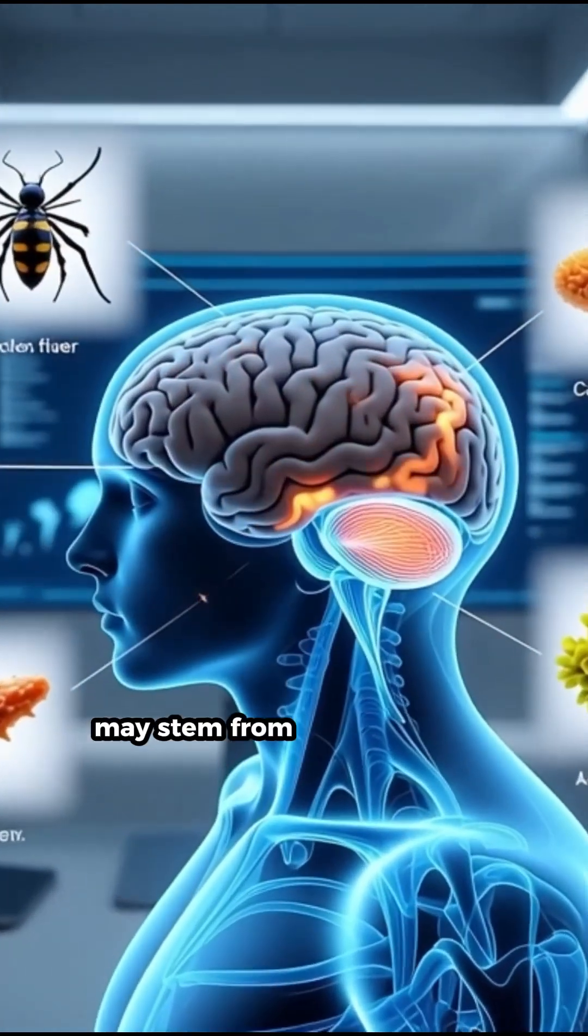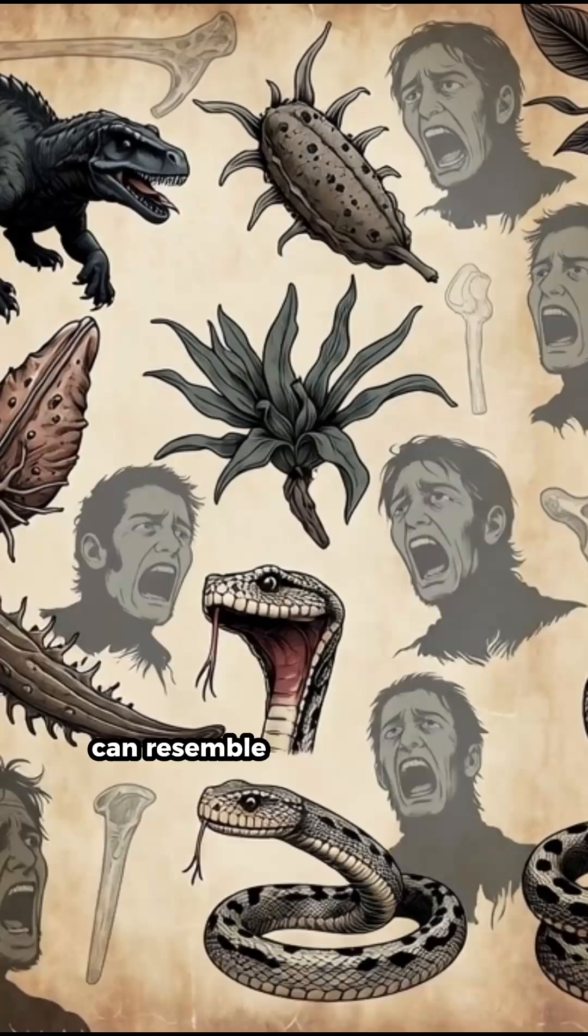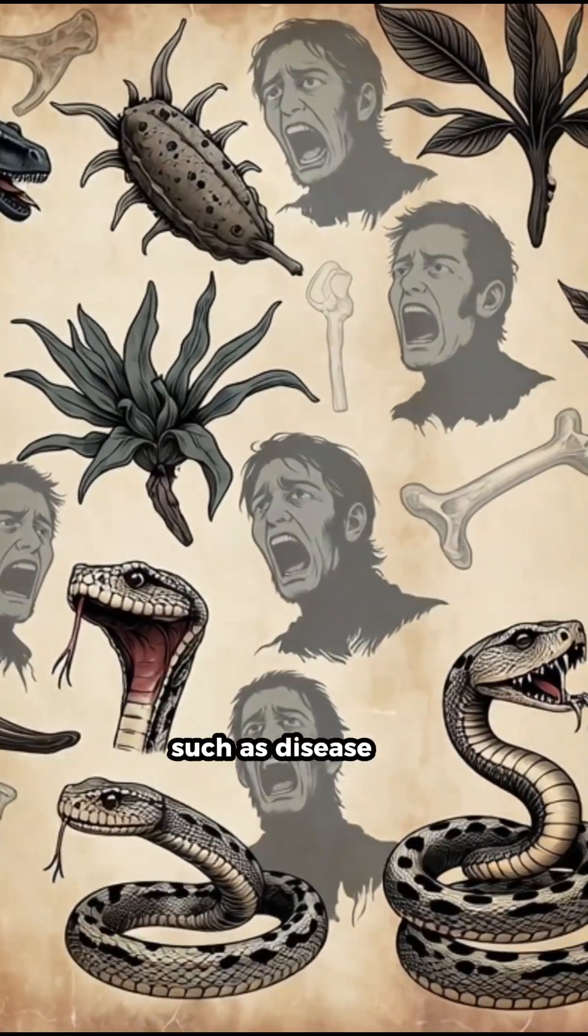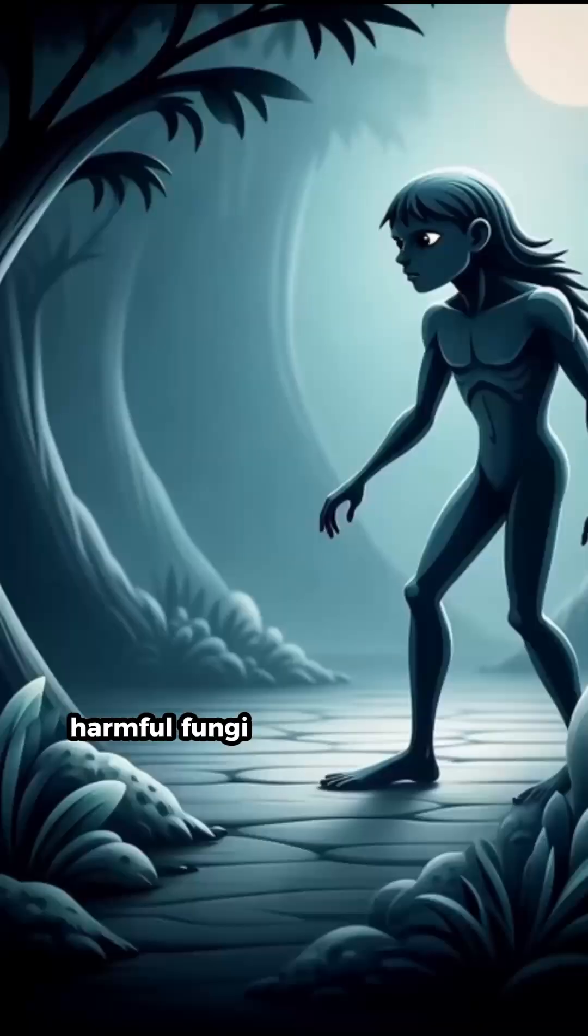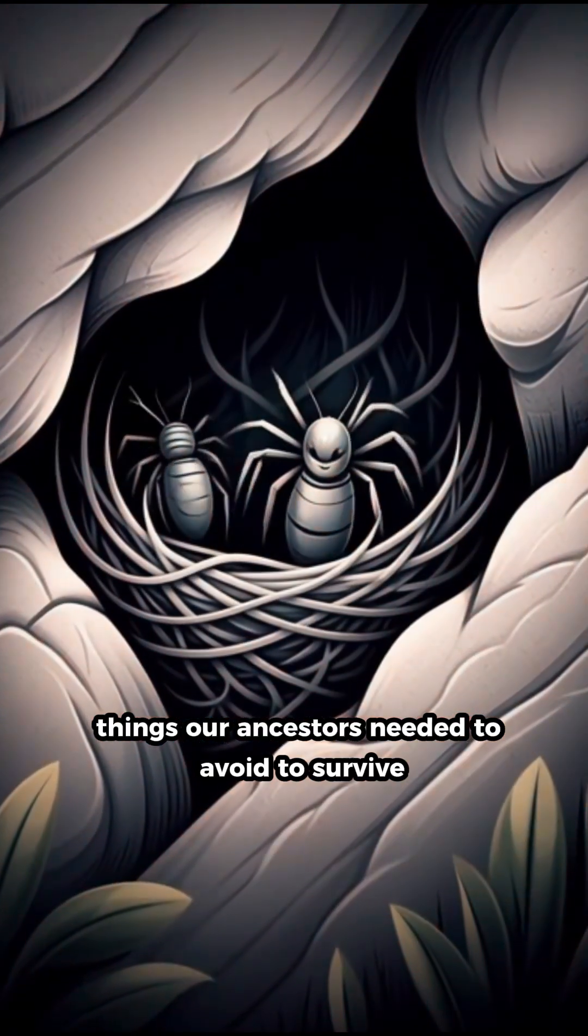Researchers believe this fear may stem from an evolutionary mechanism. These clustered hole patterns can resemble biological dangers such as diseased skin, harmful fungi, or nests of venomous insects—things our ancestors needed to avoid to survive.